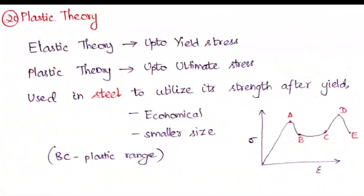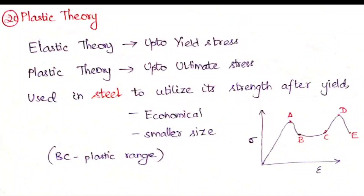The steel is used to utilize its strength after the yield point, so the ductility nature of steel is actually utilized. When you use this concept and design a steel structure, the section will be economical, the size of the section can be reduced, and safety-wise it is within the margin of safety. Let us now see some important points in plastic theory useful for competitive exams.